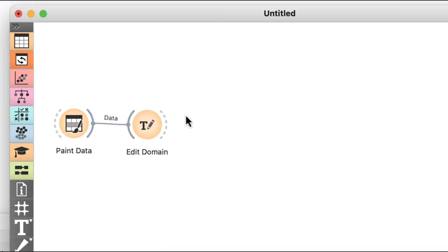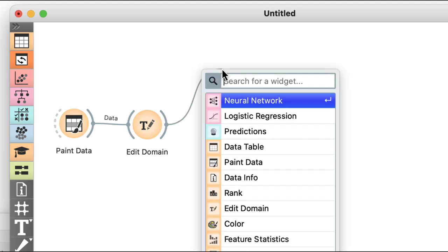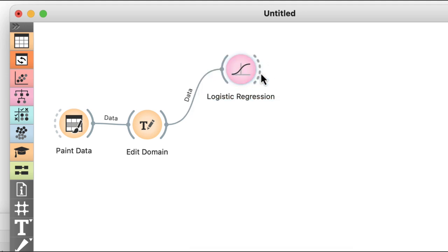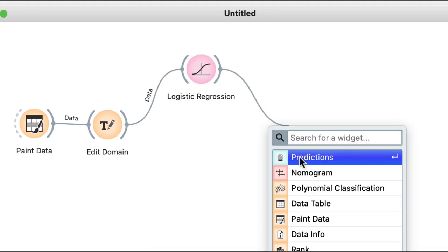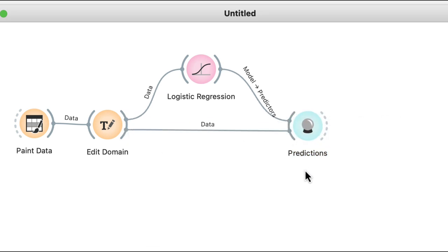Now I'll feed this data into the logistic regression widget, and then send the developed model to the predictions widget to use on our training set. This process is prone to overfitting, but at the moment I'm only interested in the decision boundary.